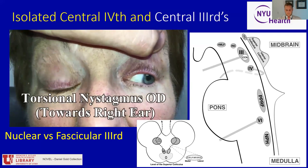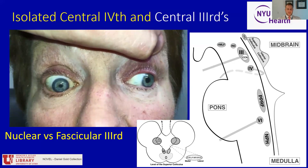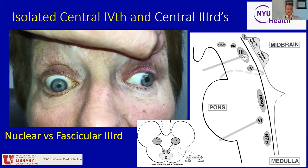To be clear, these were both examples of individuals who had damage to the CCN for nuclear isolated thirds, because of the bilateral restriction in upgaze and downgaze.